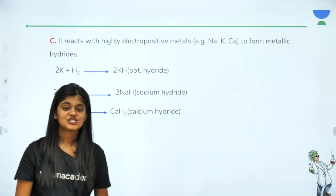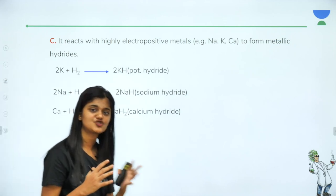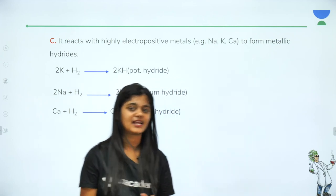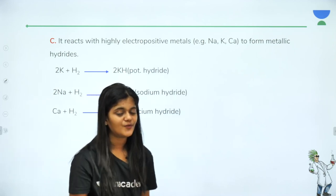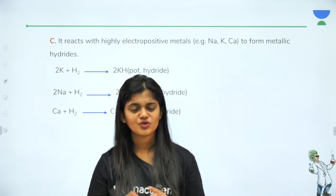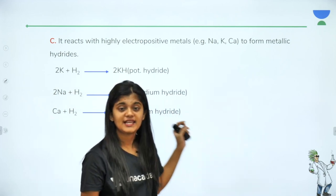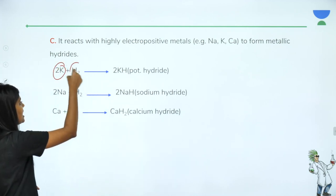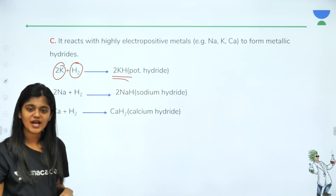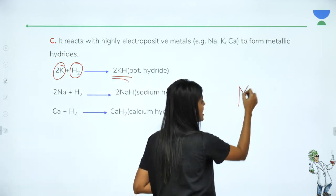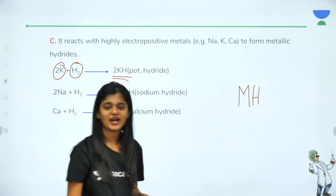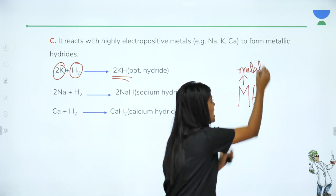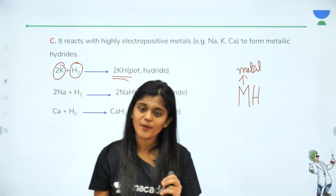Next: hydrogen reacts with highly electropositive metals — those that readily lose electrons, i.e., alkali metals (Group 1) and alkaline earth metals (Group 2) — to form metallic hydrides. For example, hydrogen reacting with potassium gives potassium hydride. The basic formula for metallic hydrides is MH, where M stands for a metal.